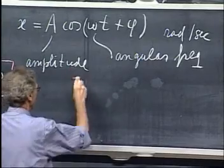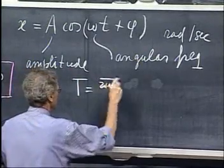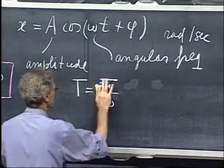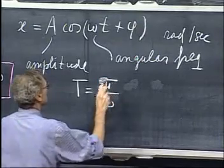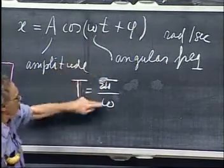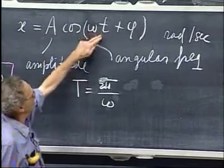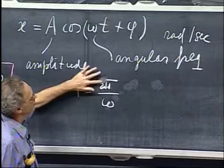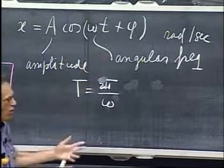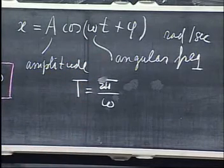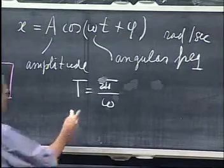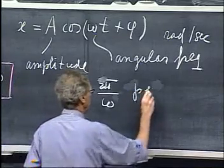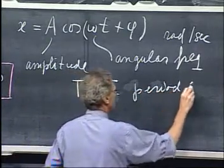If I advance this time little t, if I advance that by two pi divided by omega, then this angle here increases by two pi radians, which is 360 degrees, and so that's the time that it takes for the oscillation to repeat itself. So this is the period of the oscillation, and that is in seconds.